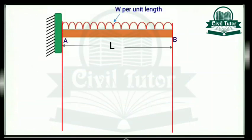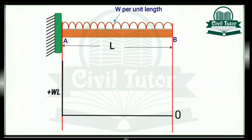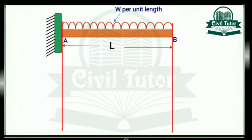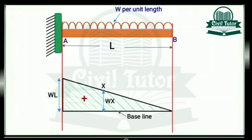In order to draw the shear force diagram, we will start by drawing the baseline AB. Since shear force at point B is 0, we will mark this point as 0. And at point A the shear force is plus WL, so we will draw plus WL to some scale. We will join these two points — this will be our resulting diagram. For a clear view, the shear force diagram will look like this. And since we got positive shear force, the SFD will be drawn above the baseline.